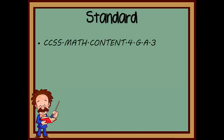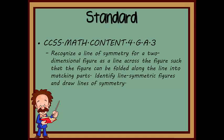The standard that corresponds with this lesson is from the Common Core for grade 4 and says students should be able to recognize a line of symmetry for a two-dimensional figure as a line across the figure such that the figure can be folded along the line into matching parts. Identify line symmetric figures and draw lines of symmetry. This is exactly what we will be learning today.